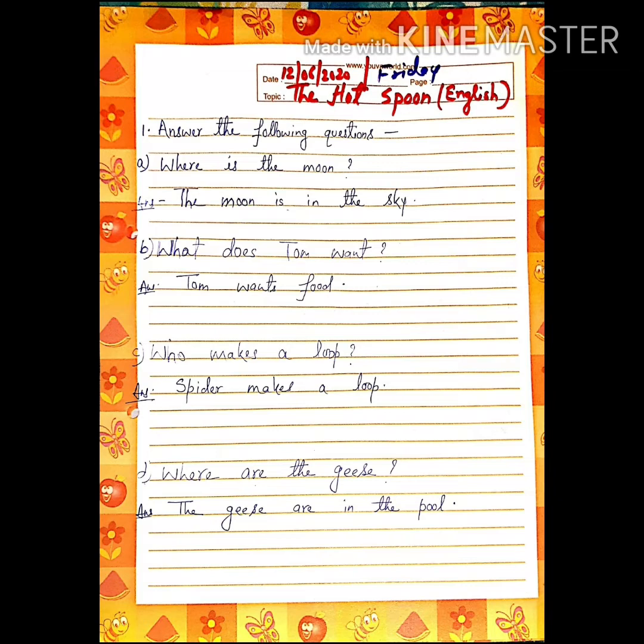Now come to question number B. What does Tom want? Tom wants food. Tom was hungry, and what does he want? Food. Tom wants food. And the spelling of wants is W-A-N-T-S, wants food.